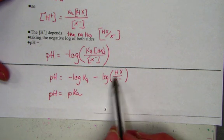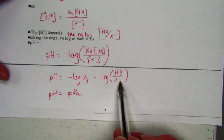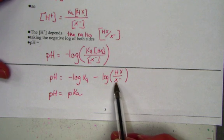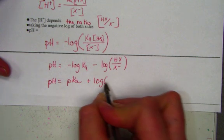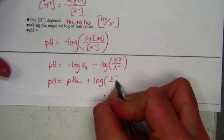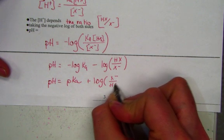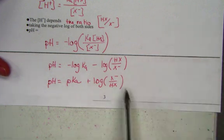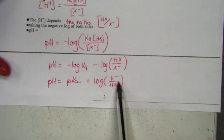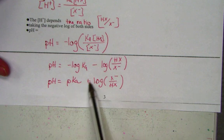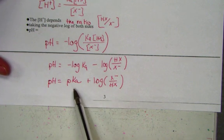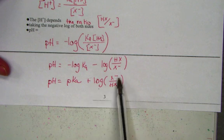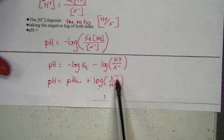Negative log of the ratio HX over X negative can actually be simplified to make it a positive log of the base over acid. By flipping that, we get base over acid, and we like to do that to make an addition sign here. pH is equal to the pKa plus the log of the ratio of the conjugate base over its acid.